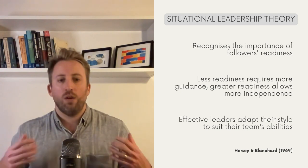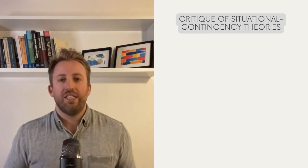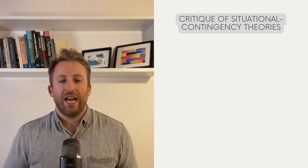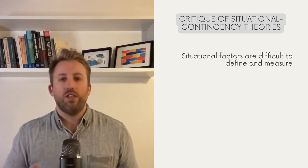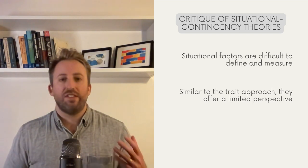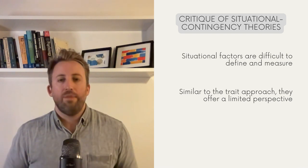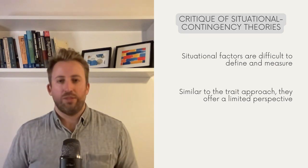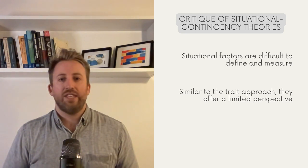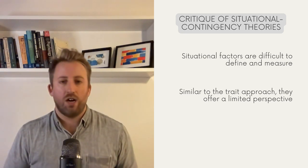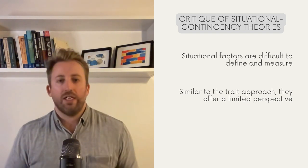Let's segue into the critique of these situational and contingency theories. The argument that leadership style should depend on the situation certainly has merit, but some have argued that situational factors are difficult to define — you know it's there, but it's hard to accurately measure or shape. Some critics say these theories have a similar issue to the trait approach: they're looking through a keyhole instead of opening the door. The trait approach fixates on individual traits; the situational approach zeroes in on the environment. But wouldn't it be more useful to see the whole picture — how traits and situations interact? That's where modern leadership theories come into play, recognizing that effective leadership depends on a blend of personal traits and situational context.